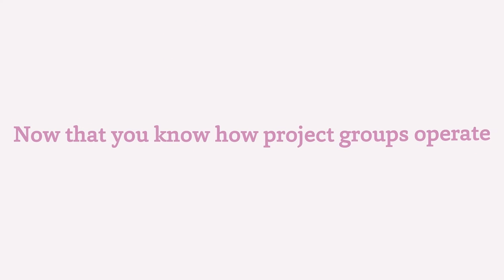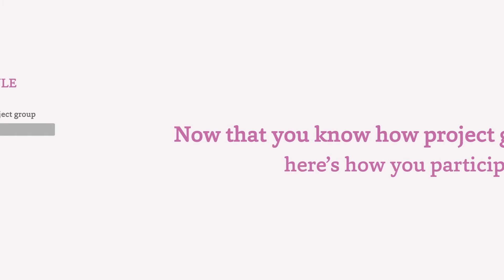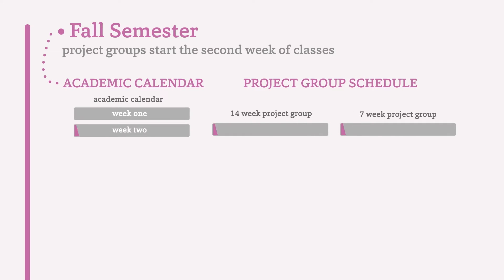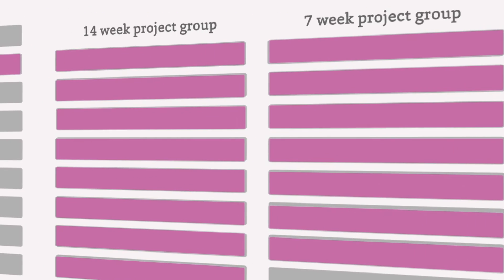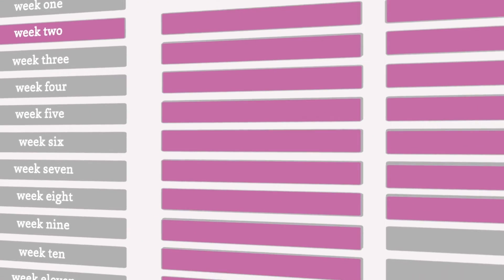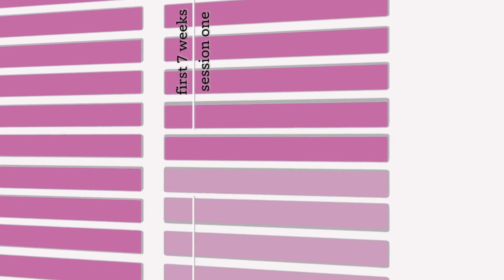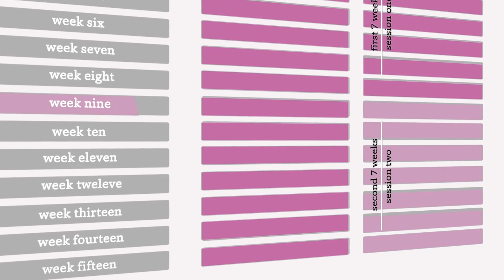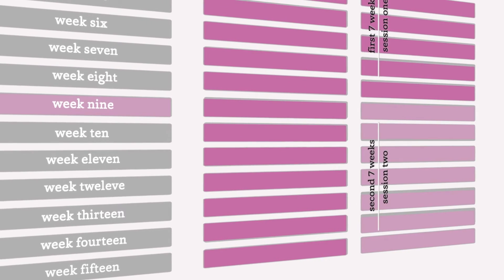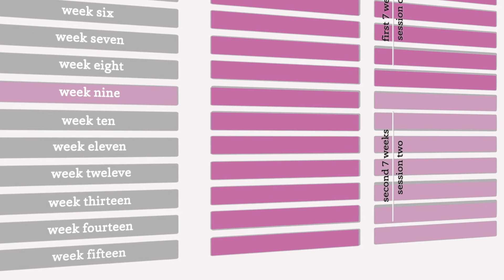Now that you know how project groups operate, here's how you participate. In the fall, project groups start the second week of classes. While 14-week and 7-week project groups start at the same time, 14-week project groups have one session per semester, while 7-week project groups have two. 7-week project groups start over during the ninth week of classes, so you'll have the option to take a group in the first half or the second half of each semester.